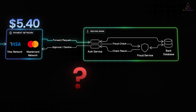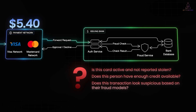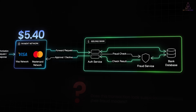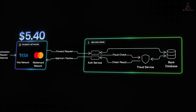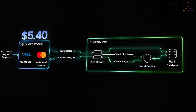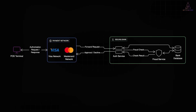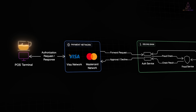The bank checks a few things: is this card active and not reported stolen? Does this person have enough credit available? Does this transaction look suspicious based on their fraud models? If everything looks good, the bank sends back an approval code. If not, declined. That response travels back through the same network to the merchant's terminal. The whole round trip takes about 200 to 500 milliseconds. You hear the beep, grab your coffee, and you're done.